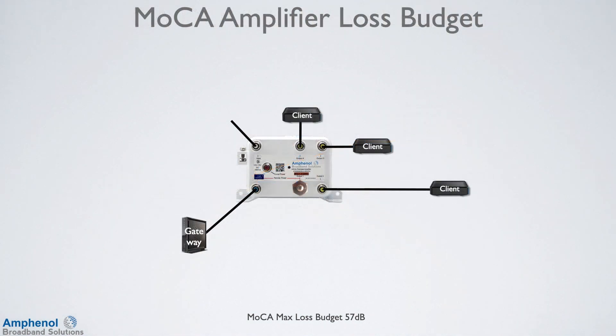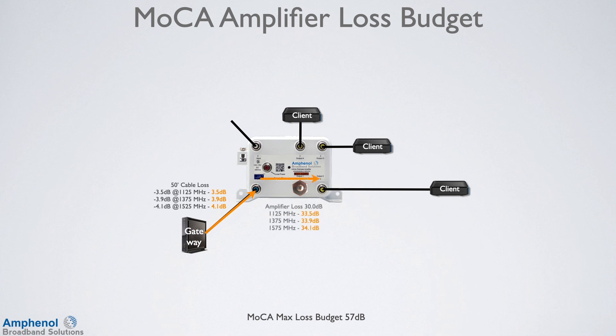Next we'll look at the loss budget using a MOCA amplifier, where all outlets are home run to one location. We'll calculate the loss from the gateway to the client on the bottom right: cable loss, the MOCA amplifier loss of 30 dB, and the final cable loss. Add them all up for the total loss budget. As with the DOCSIS passive device, all paths from the gateway to any client would be about the same — the only difference would be the cable loss to each client.